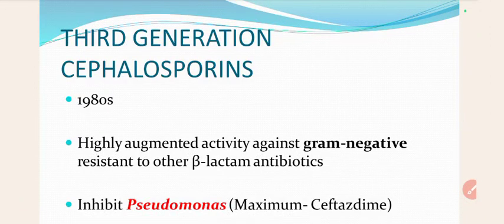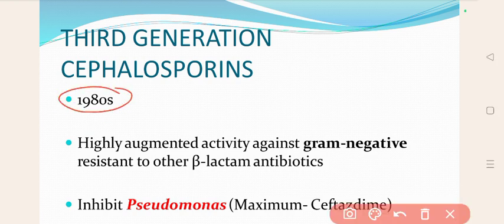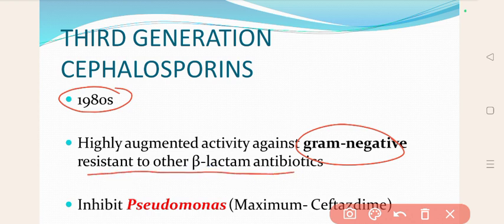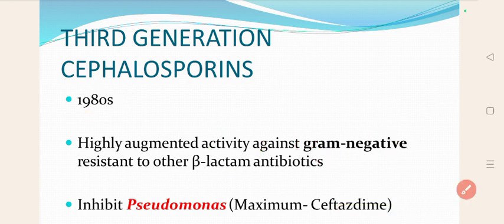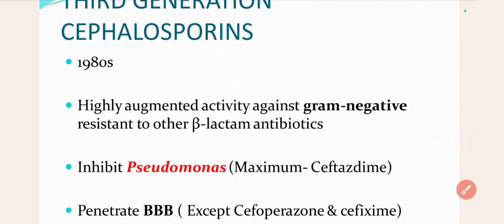Now we'll discuss the third-generation cephalosporins. They were discovered in the 1980s and are more effective against gram-negative bacteria — those resistant to other beta-lactam antibiotics. They show highly augmented activity against gram-negative organisms resistant to other beta-lactam antibiotics. That is the important feature of third-generation cephalosporins.